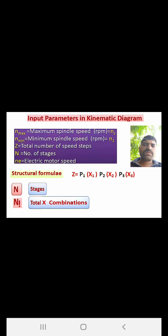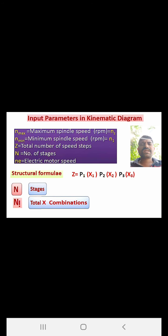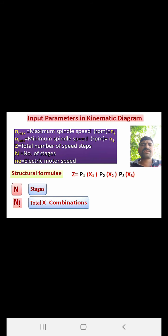To write the structural formula: z equals the product of stages. p1 is the number of speed steps in the first stage, p2 in the second stage, p3 in the third stage. The characteristic values are: x1 = 1, x2 = p1, x3 = p1×p2. Remember these relationships.